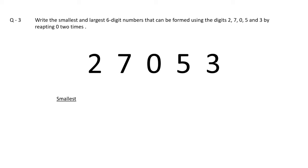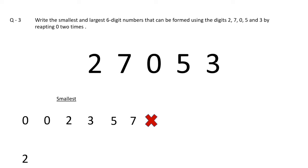To make the smallest number, pick the smallest digit first. Since zero must be repeated two times, we write zero, then zero again, then 2, then 3, then 5, then 7. But zero cannot come on the first place — here zero comes on the first two places, so the number formed is only four digits. Therefore, on the first place we put 2, then zero, then zero again, then 3, then 5, then 7. This is the correct answer.